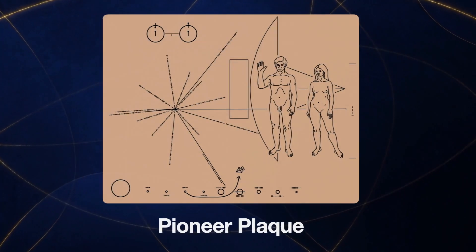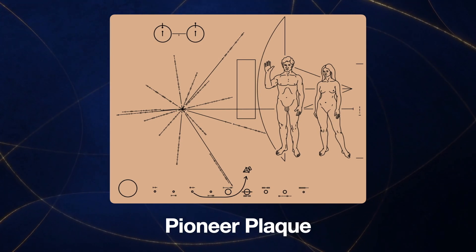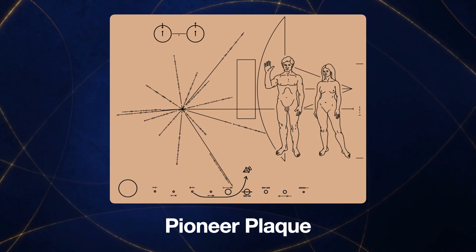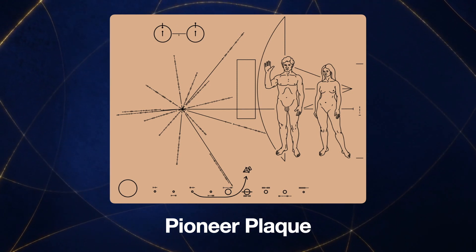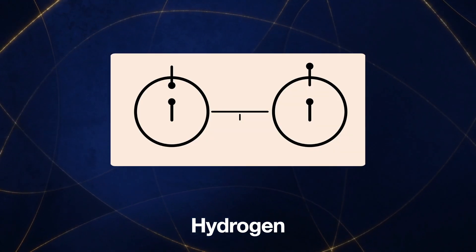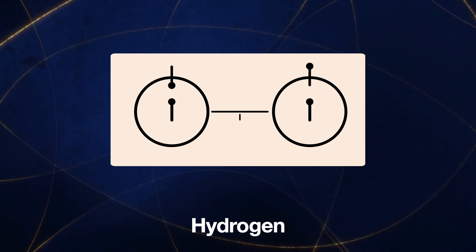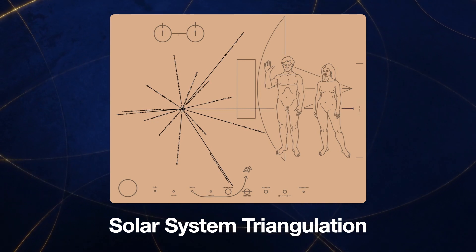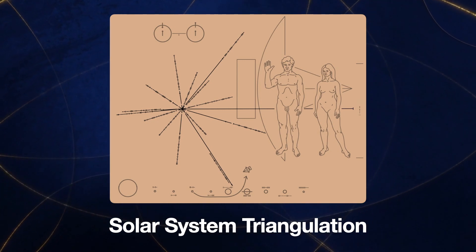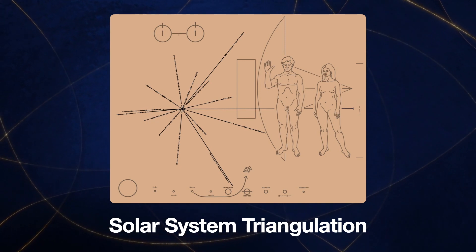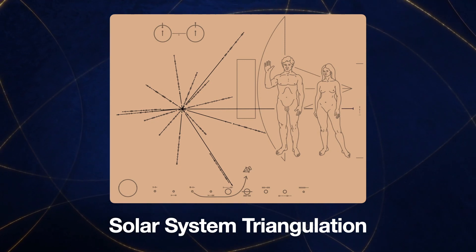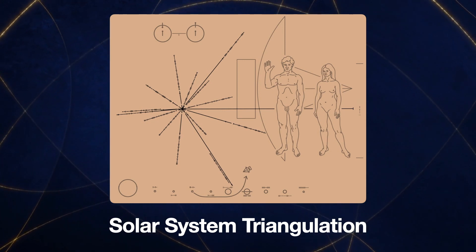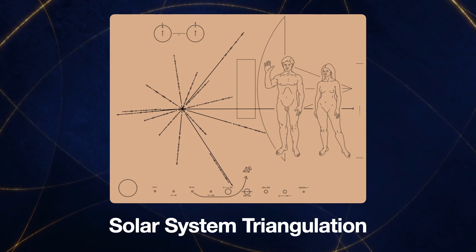Onboard each spacecraft are artifacts of humanity. The Pioneers each carry a Pioneer plaque designed to help anyone who finds the spacecraft learn more about humanity. The top left shows a depiction of hydrogen, the most abundant element in the universe. The middle has a map of where the Sun is relative to 14 pulsars. A pulsar is a type of star that emits electromagnetic radiation from its magnetic poles. The lines and marks represent the period of each pulsar in binary and one line indicates the Sun's distance from the center of the Milky Way galaxy.